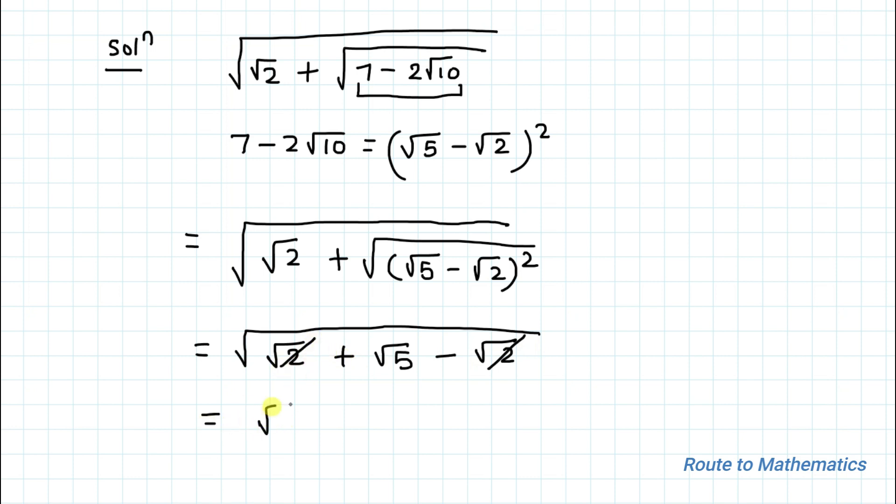So we can write this as 5 to the power 1 by 2. That is the root to the power 1 by 2. So this 2 gets multiplied. So we have 5 to the power 1 by 4 is the answer.